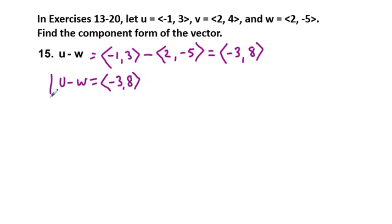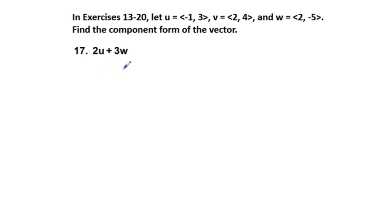Problem 17: 2u plus 3w. We're going to take 2 times u, which is <-1, 3>, plus 3 times the vector w, which is <2, -5>. 2 times -1 is -2, and 2 times 3 is 6. It's kind of like the distributive property—we distribute that 2 to what's inside the bracket. Then we have 3 times 2, which is 6, and 3 times -5, which is -15.